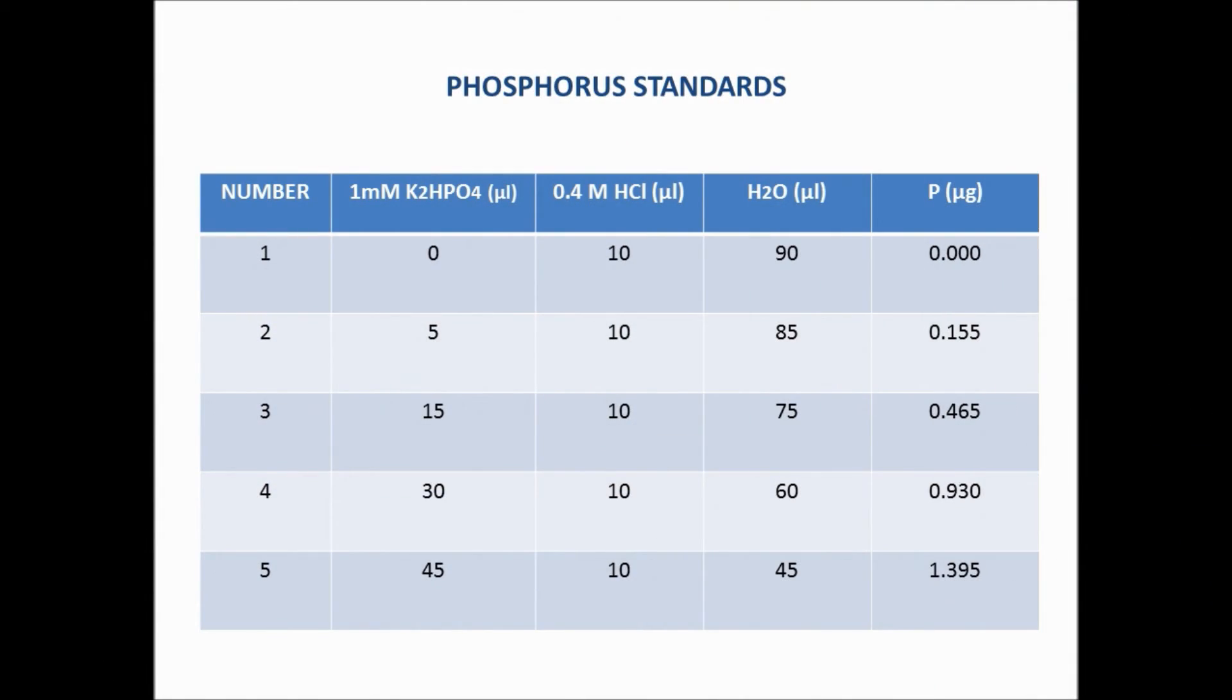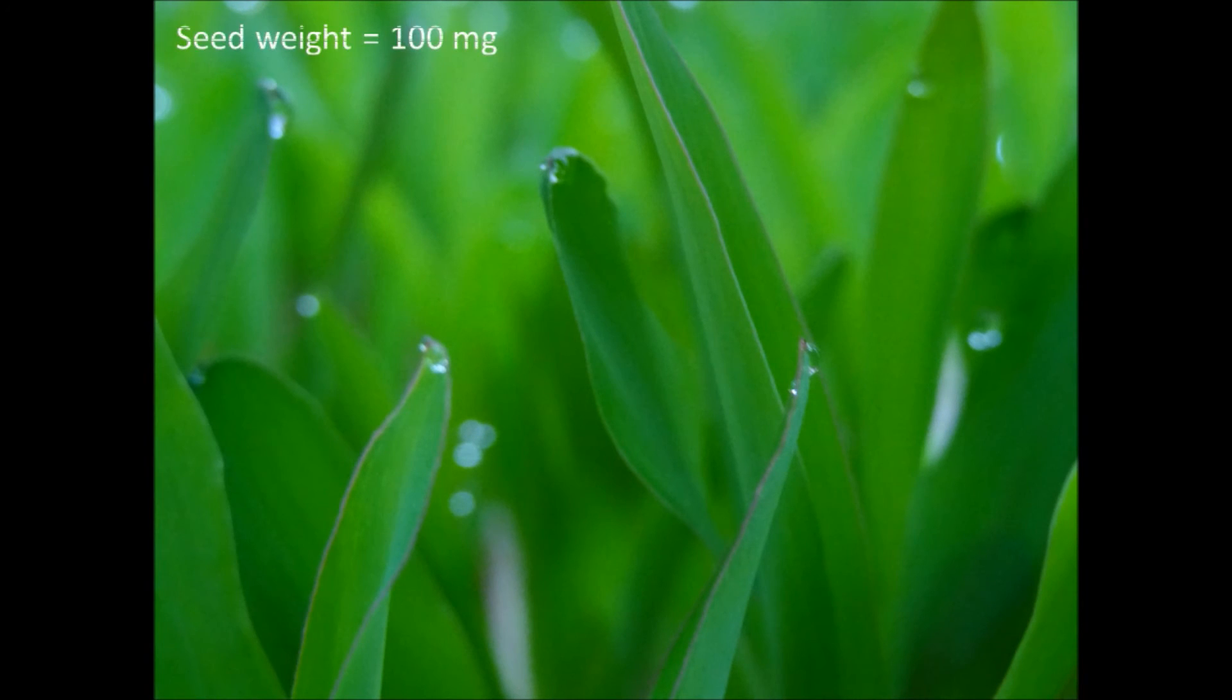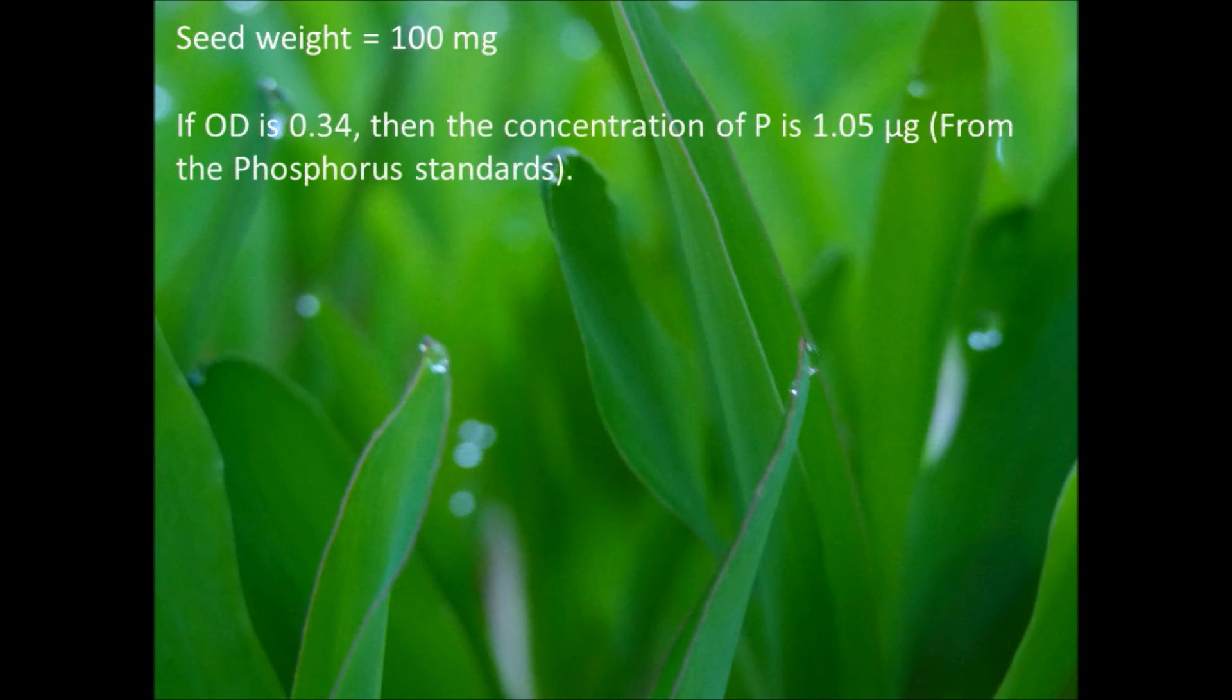For example, if the OD is 0.34, then the concentration of free phosphorus is 1.05 micrograms, estimated from the phosphorus standards. This 1.05 micrograms of free phosphorus is present in 10 microliters of sample